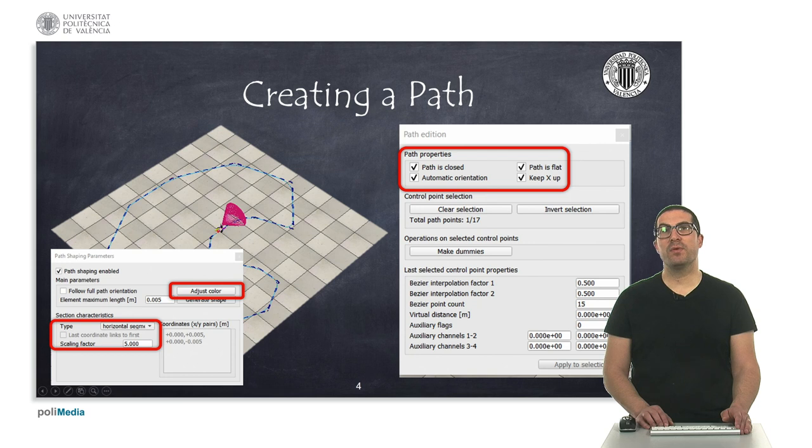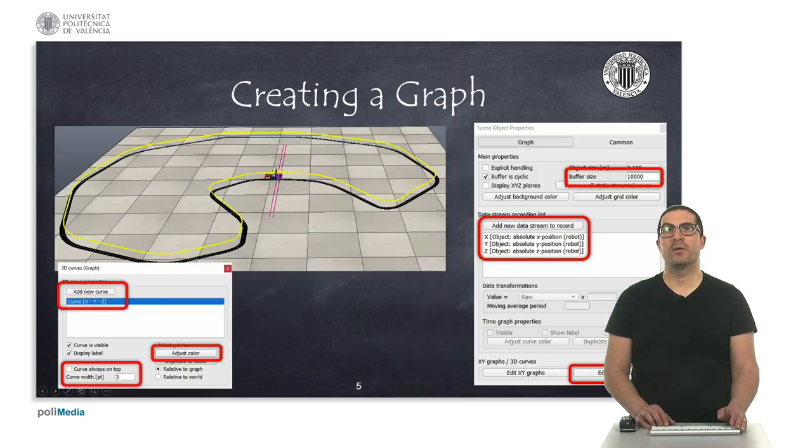In this case, I have created a closed and flat path with x-axis pointing up. The path is made with horizontal segments, as you can see there, with a scaling factor of 5 and the color of the path is black in this case. Adjust the color to a black color.